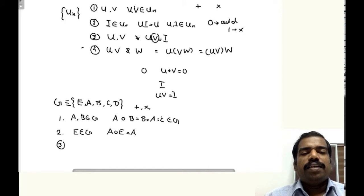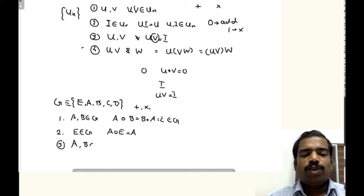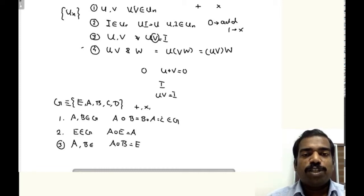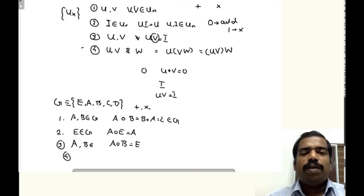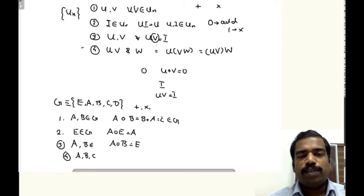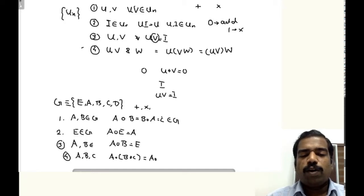The third property: for every element a, you can find an element b in G such that the composition of a and b gives you the identity element. The fourth property: you have to find three elements a, b, and c in the group such that the composition obeys the associative law — a∘(b∘c) equals (a∘b)∘c. These are the four properties of a group.